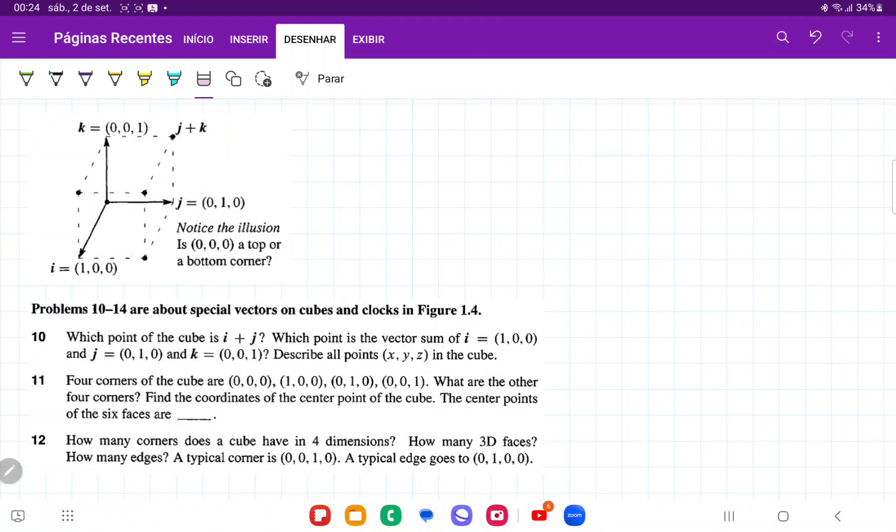So for problem number 10, we're given figure 1.4, which is this cube, and then it's asking us which point of the cube is i plus j.